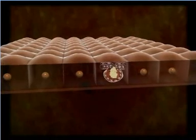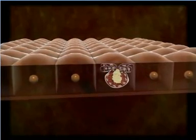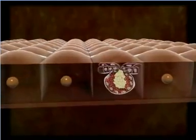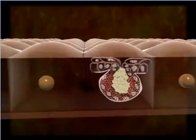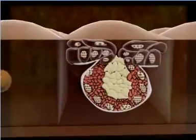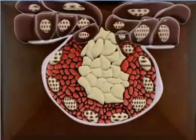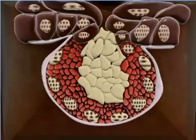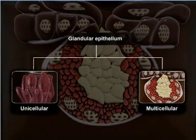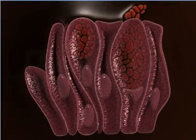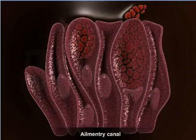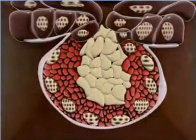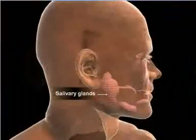In some cases, the cells of columnar and cuboidal epithelial cells become specialized for synthesizing and secreting biochemicals. In such cases, the epithelium is known as the glandular epithelium. Based on the number of cells involved, the glandular epithelium is of two types: unicellular, such as that in the alimentary canal, and multicellular, such as that in the salivary glands.